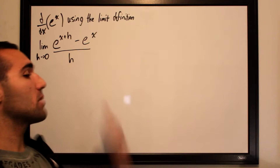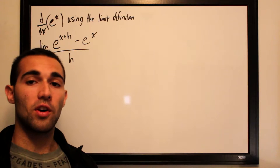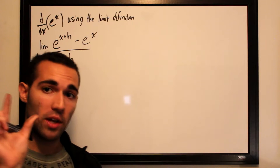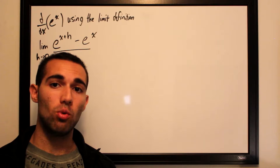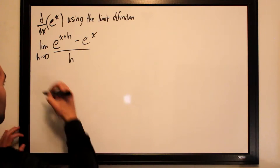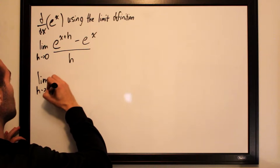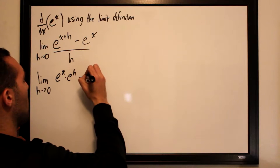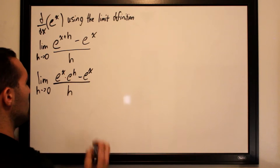Now e to the x plus h can be rewritten as a product of two different functions. It's going to be e to the x and e to the h, because whenever you multiply two things with common bases, you add their exponents. So e to the x plus h becomes e to the x times e to the h.